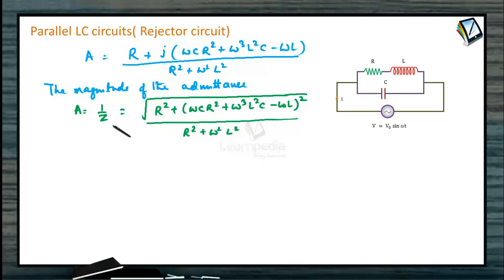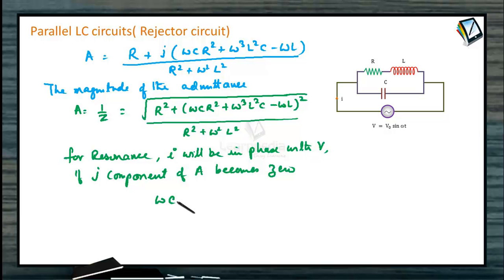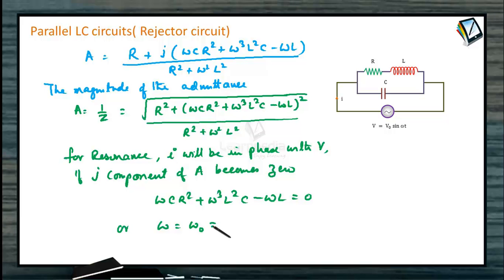For resonance, I will be in phase with V. If the imaginary component of A becomes equal to zero, then the reactive term should equal zero. This means omega·C·R squared plus omega cubed·L squared·C minus omega·L equals zero. So the resonant frequency omega-zero equals the square root of (1 by LC minus R squared by L squared).